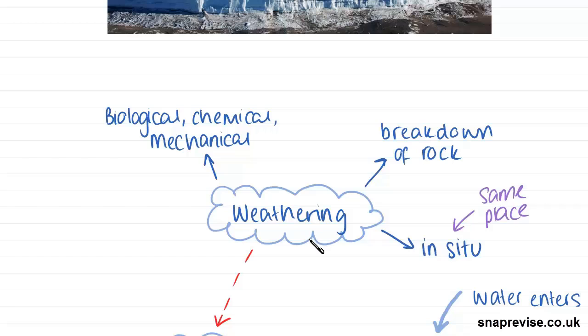Weathering is usually caused by biological, chemical and mechanical processes but unfortunately due to the cold temperatures in glacial regions, biological processes very rarely take place so we are relying on chemical and mechanical weathering.